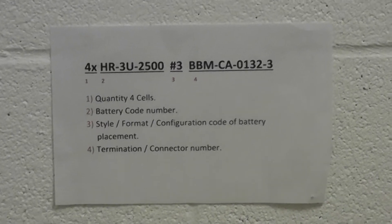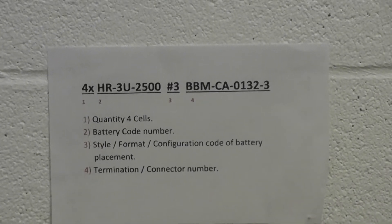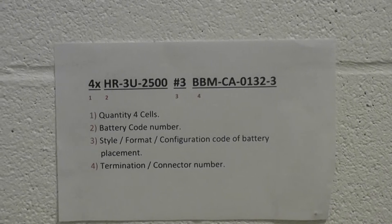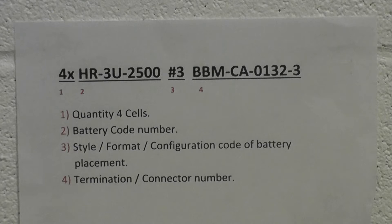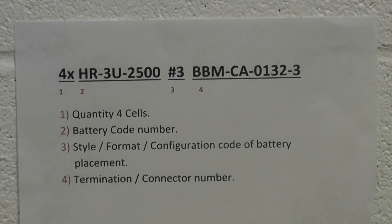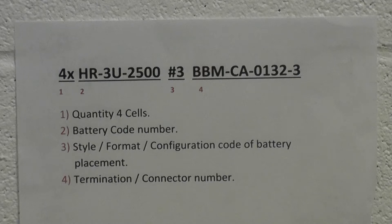We have chosen a random battery pack part number for our example, as you can see displayed on the wall there. The part number itself doesn't really matter for this explanation, but you can see there are red numbers under each part of the underlying part number. Each of them explains the four different steps you must go through in order to develop this part number, and I will briefly go through each of them now before we go through the steps online.